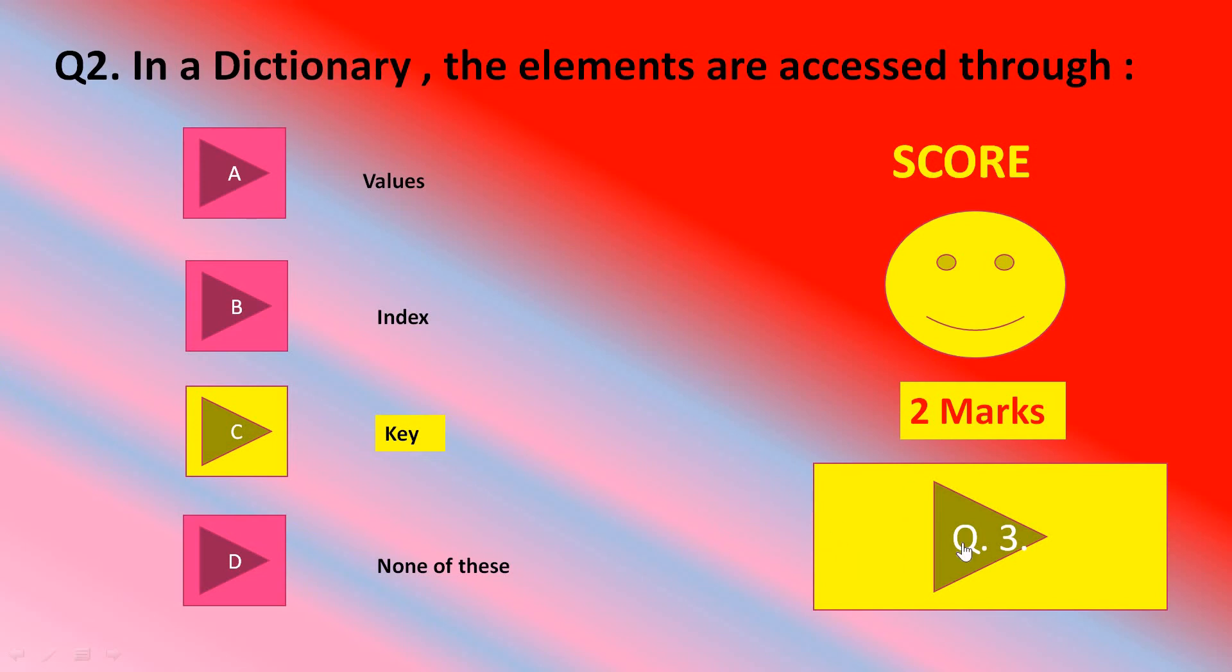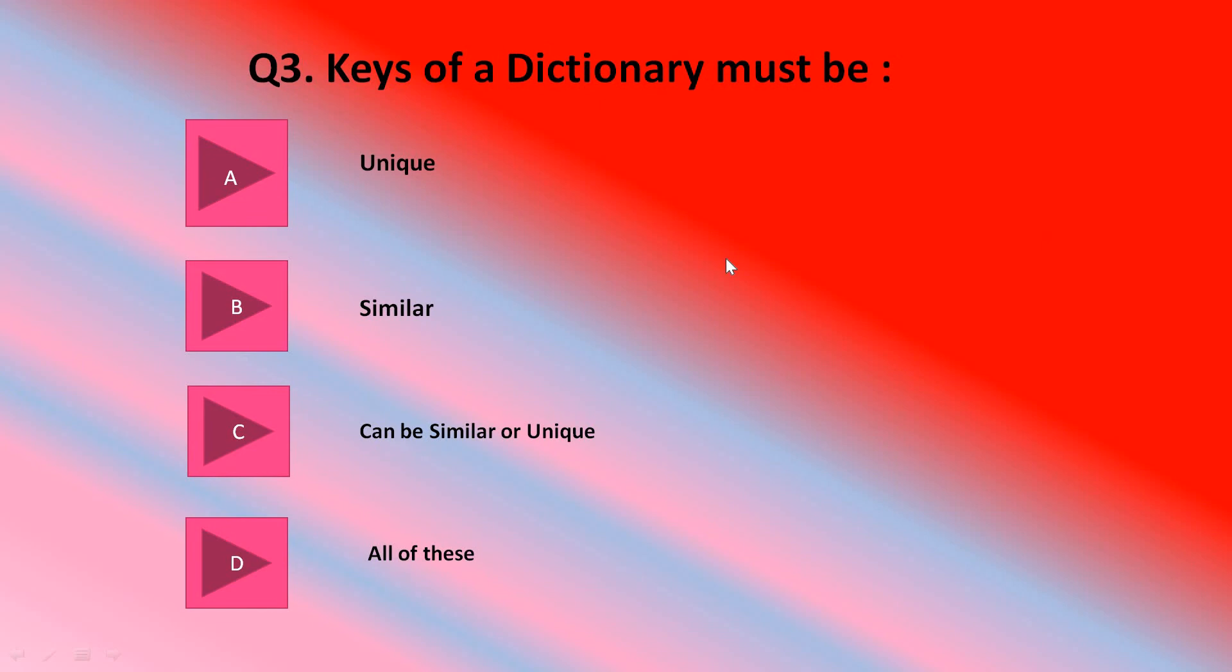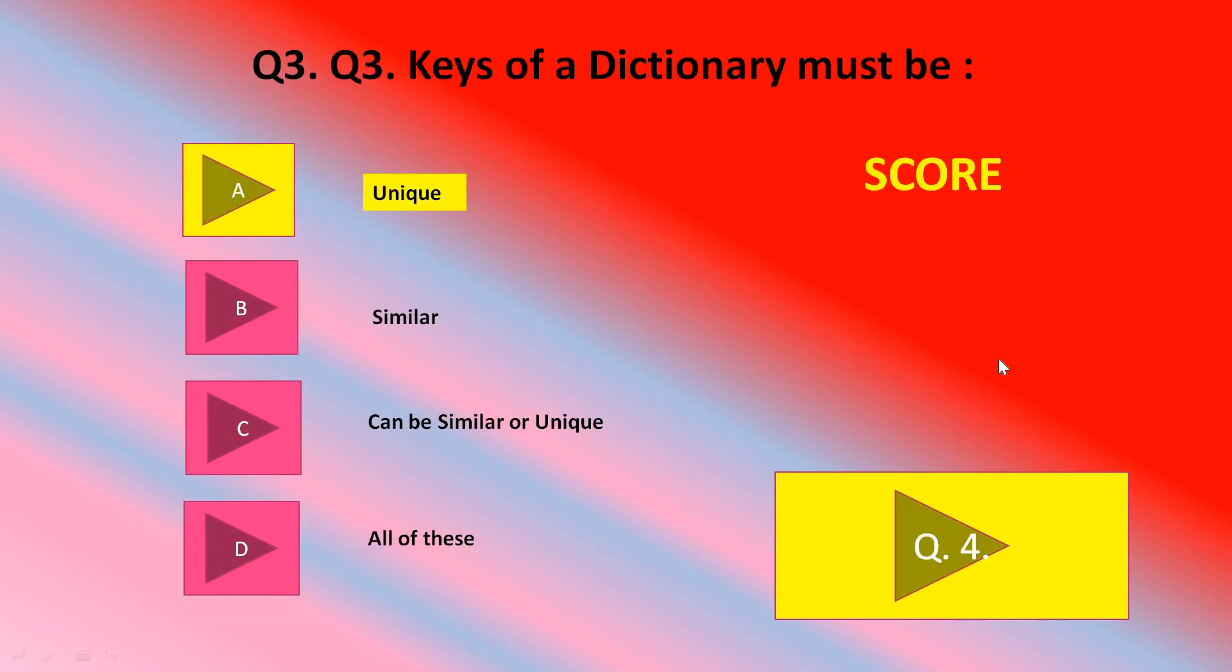There are 12 questions students in total. Keys of a dictionary must be unique, similar, can be similar or unique, or all of these. Yes students. Let me try C part - wrong. Wrong. Yes students, it should be unique. Keys of a dictionary must be unique and for this you also get two marks.